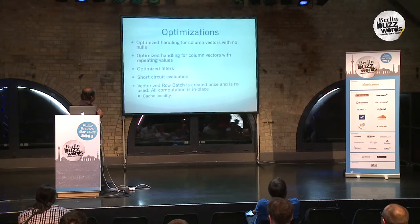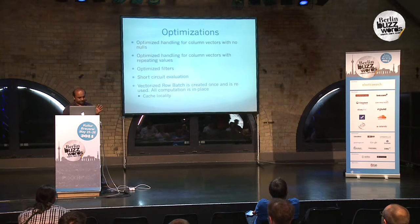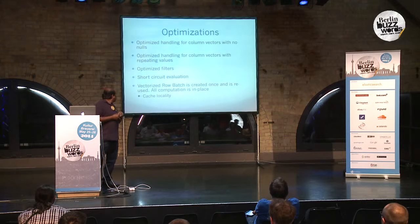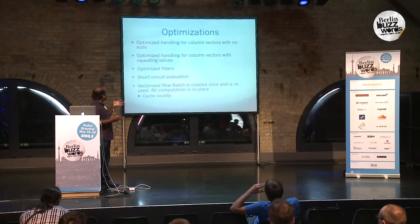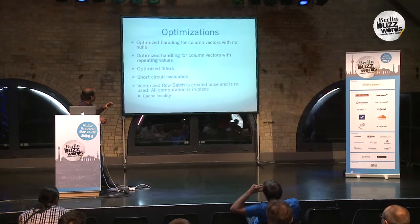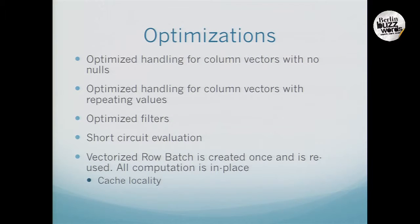Another thing about this whole computation was that it is in-place: we create the row batch once, and each time we call next on the reader, the whole batch is populated in the same row batch object. All computations just modify the row batch itself. This also means that during query planning, any intermediate vectors that need to be created, or any additional output vectors, are all allocated up front with no further object allocation later.